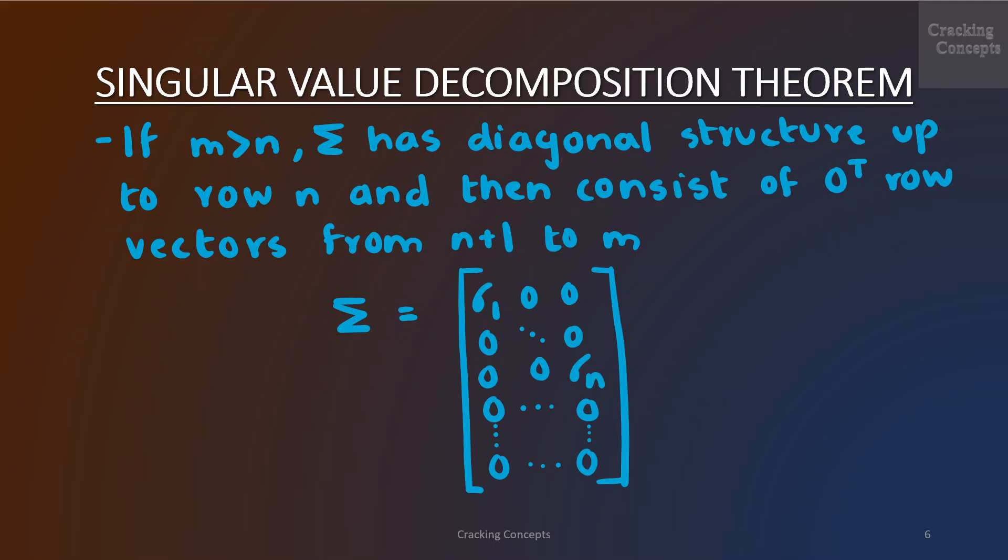Specifically, if m > n, then the matrix Σ has a diagonal structure up to row n and then consists of zero row vectors from n+1 to m. Thus, the matrix Σ will look like this.